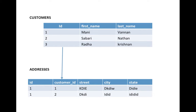Hi everyone. In this tutorial I'd like to show you how to create a materialized view in Postgres, how to create a trigger and function in Postgres. I have two tables: customer and addresses. In the customer table I have columns ID, first name, and last name. In addresses I have columns ID, customer_id, street, city, and state. Here customer_id is my foreign key — a foreign key is the primary key of another table, which here is the customers table.